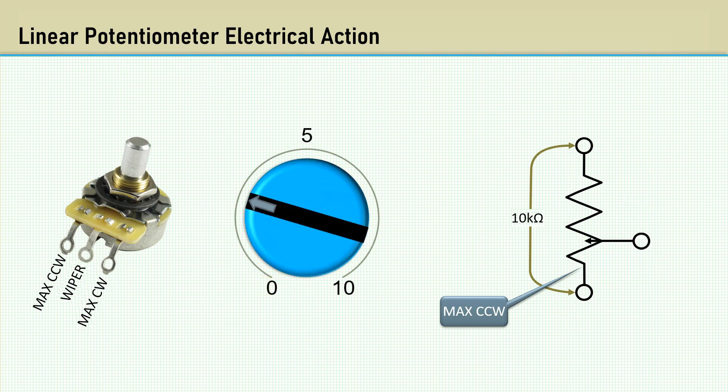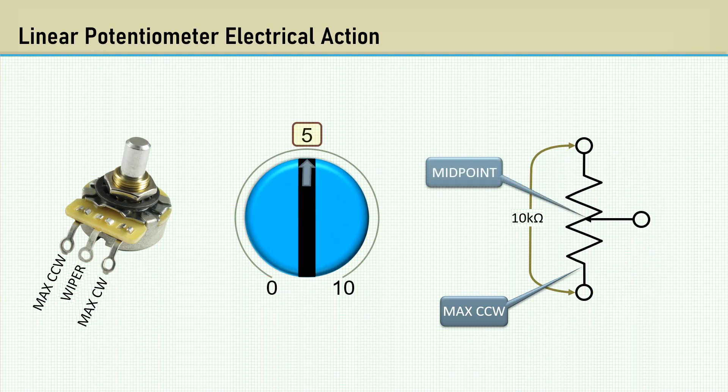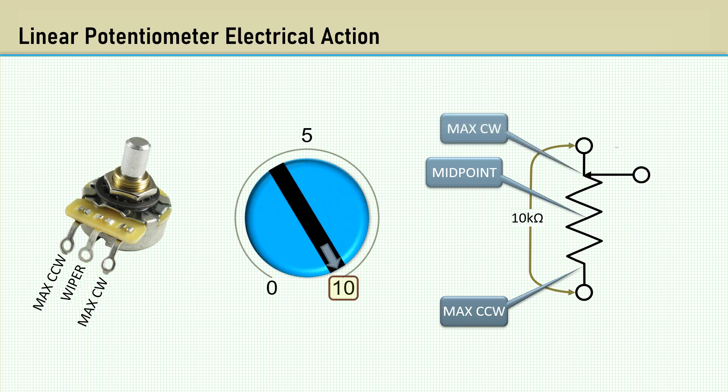Turning the wiper to the mid position, which I'm calling five, should read 5,000 ohms from the wiper to the max counterclockwise terminal, and 5,000 ohms from the wiper to the max clockwise terminal. Turning it up to 10, you should read near zero ohms from the wiper to the max clockwise terminal, and 10,000 ohms from the wiper to the max counterclockwise terminal.